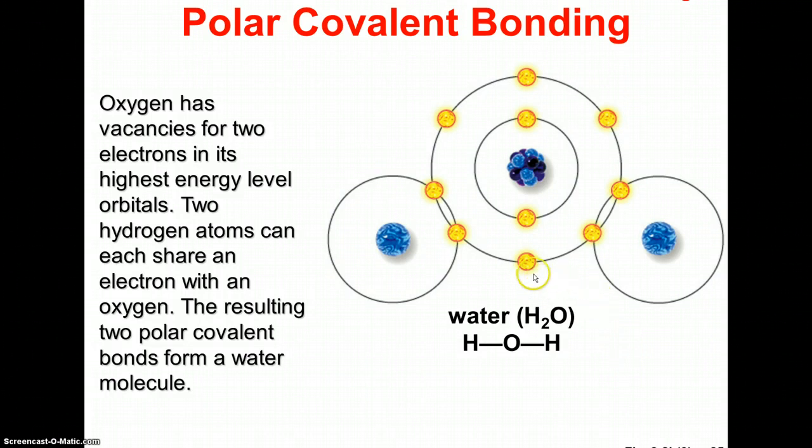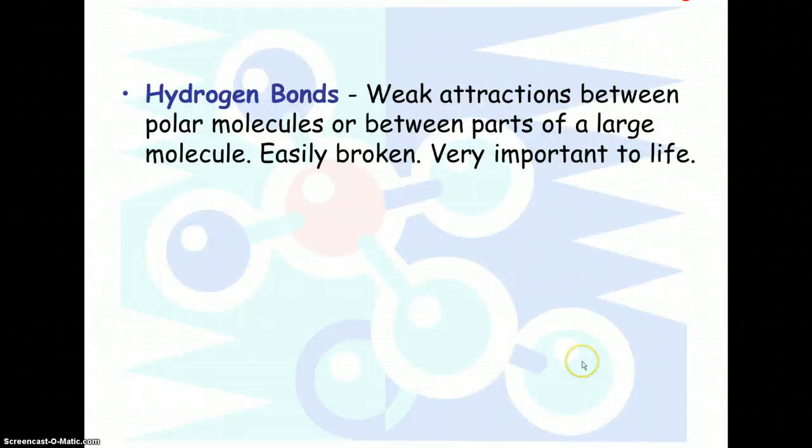But the idea is that oxygen, here in the diagram, it pulls a lot harder on the electrons than the two tiny hydrogens. And so what ends up happening is the oxygen actually ends up with a slightly negative charge, and the hydrogens end up with a slightly positive charge. Now the significance of this is that it leads to attractions from that one water molecule with other water molecules around it.